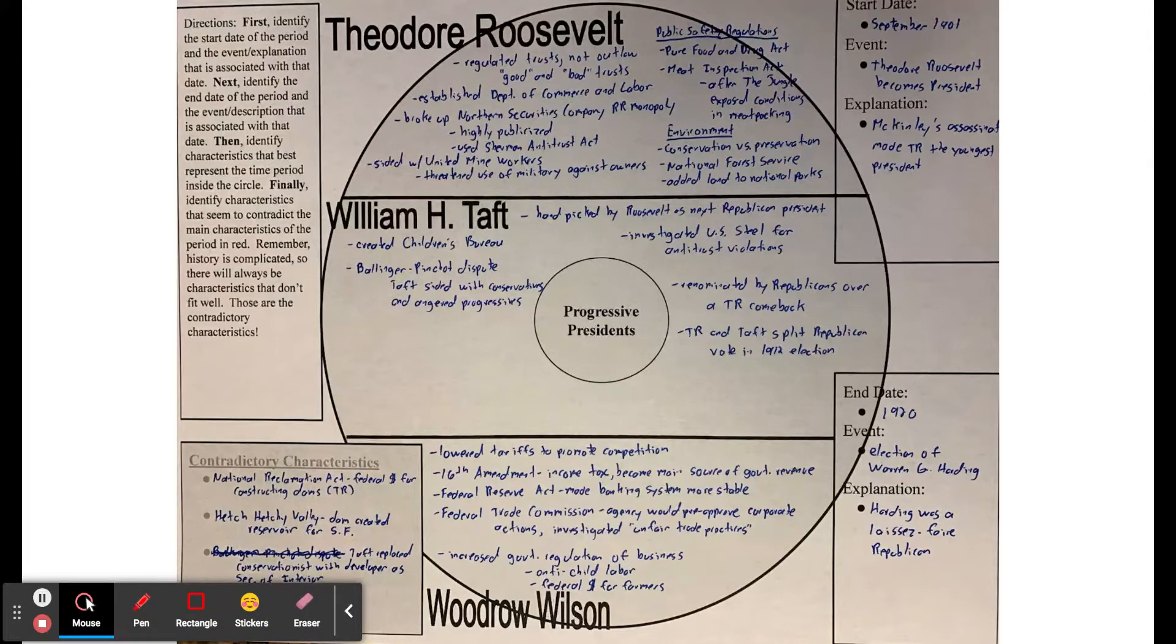He was also president when we were starting to regulate things for public safety. The Pure Food and Drug Act was basically, we have the Food and Drug Administration today which makes sure that medicines and food don't have anything harmful in them. This Pure Food and Drug Act was regulating the food and drug industry to make sure that with medicine, for example, people weren't making false claims or putting toxic things in there that were poisoning people.